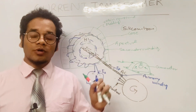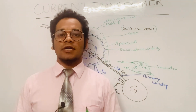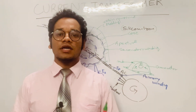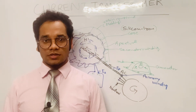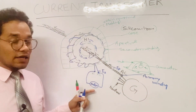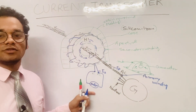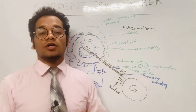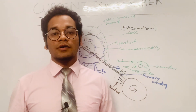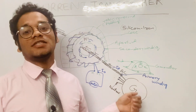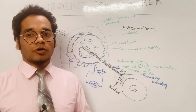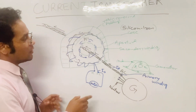The current transformer can be used in applications like controlling, protection, and indication. It can also be used in conjunction with AC ammeters. Hence the current transformer is used for the control and protection of power distribution systems.